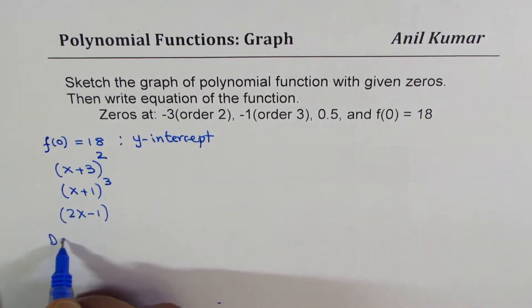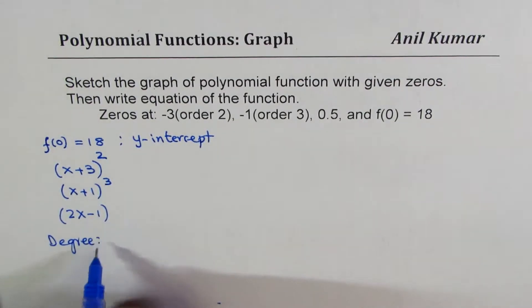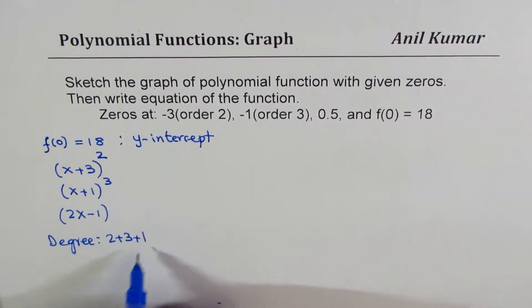So, those are your zeros. From the zeros, we actually get the degree. So, degree is 2 plus 3 plus 1, which is 6. So, we have even degree. Even degree means both same sides.